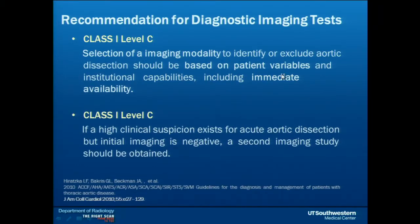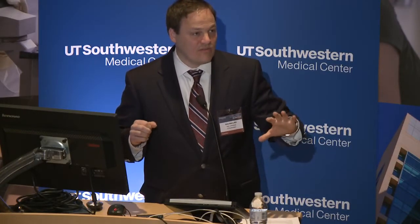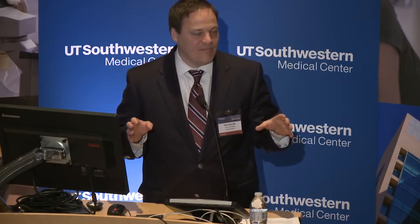Selection of an imaging modality to identify or exclude aortic dissection should be based on patient variables like body habitus and acuity, and institutional capabilities including immediate availability. If you have someone standing there with an echo probe and anesthesia available, you could do a TEE right away to rule out aortic dissection — but usually this is a slower and very invasive test. MRI is a possible test but takes a long time. So in most hospitals, the most immediately available test for acute aortic dissection would be CT.